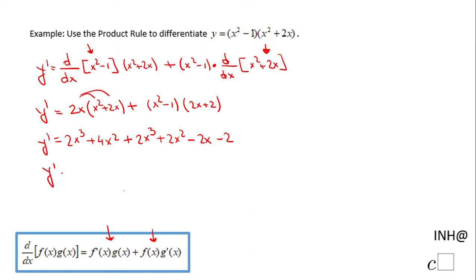And the last thing here, I'm going to do some simplification. I have 2x cubed plus 2x cubed, that's 4x cubed. 4x squared plus 2x squared, that is 6x squared minus 2x minus 2.